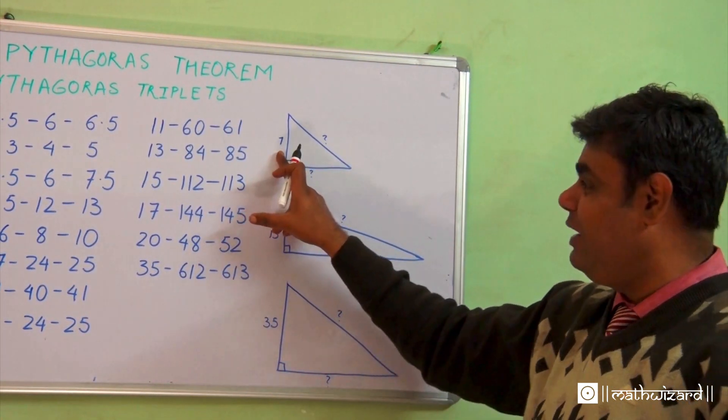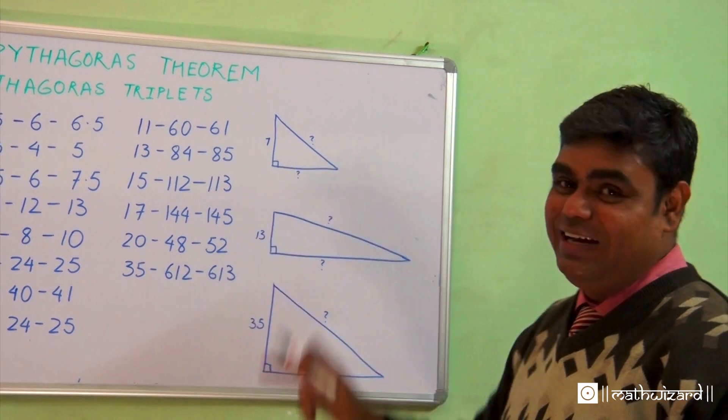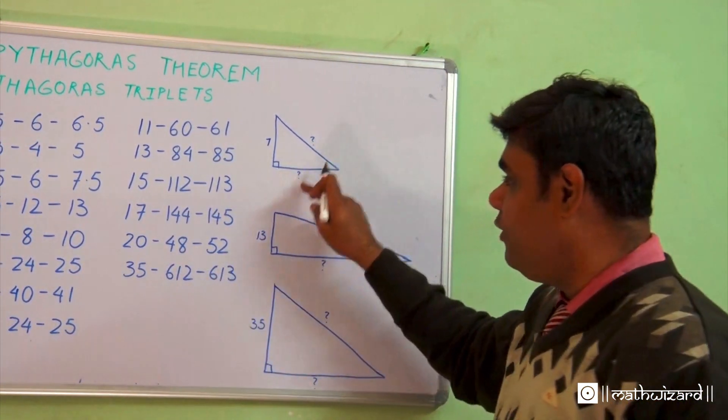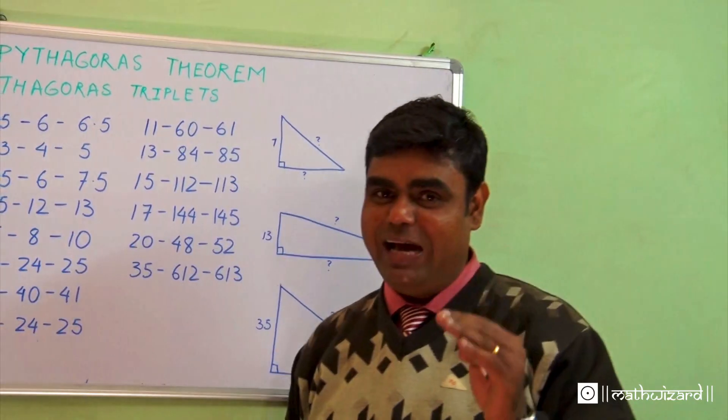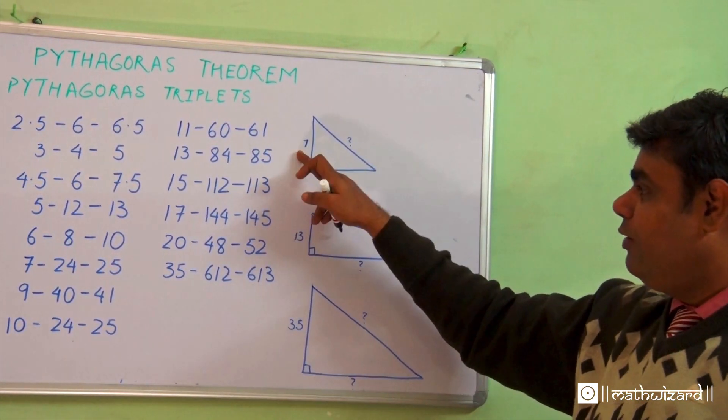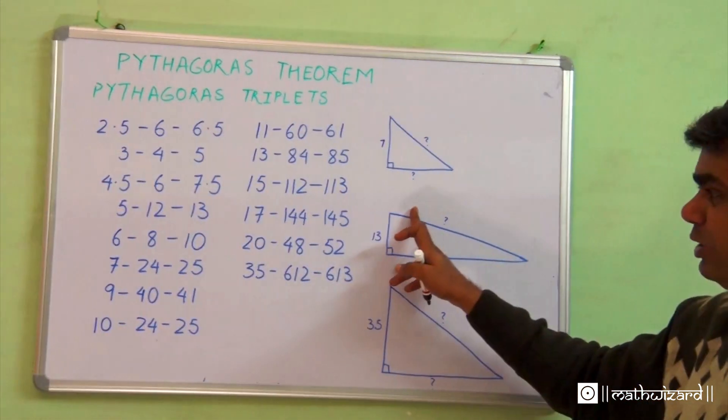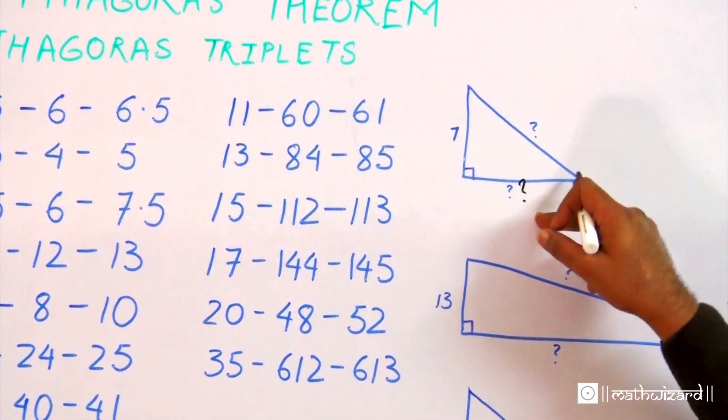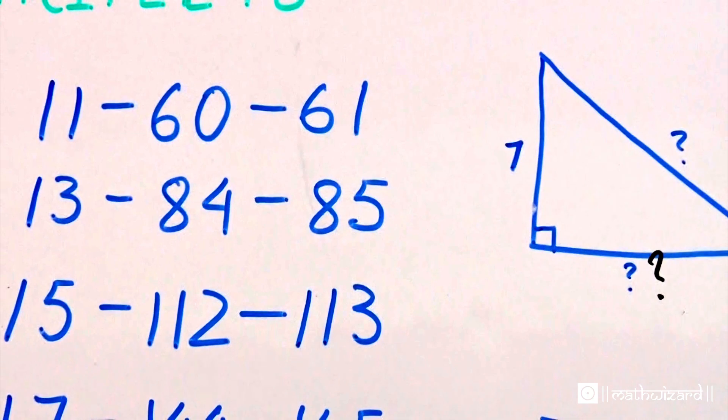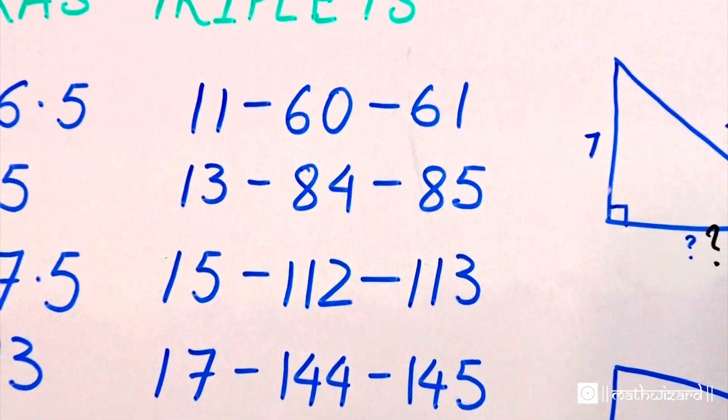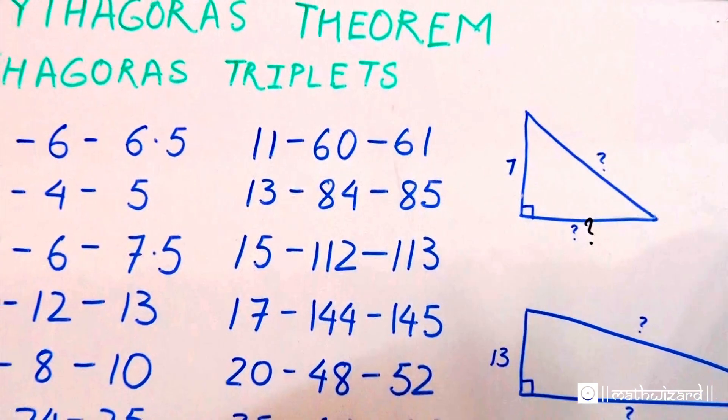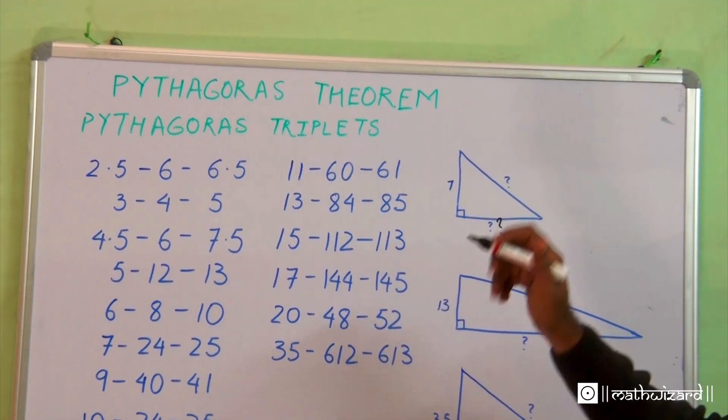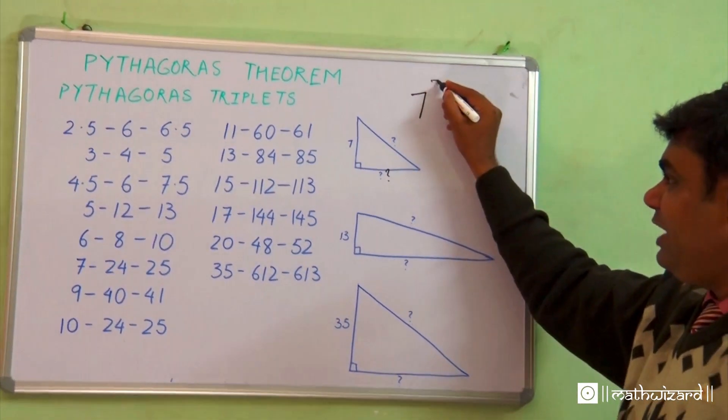If I was given one number, it's nearly next to impossible to solve two values because in maths, if I know two things, I can find out the third thing. But here I just know one and the other two I don't know. How can I solve it? But if I knew triplets, I can solve it for sure.